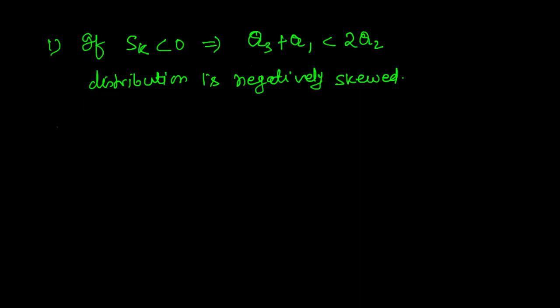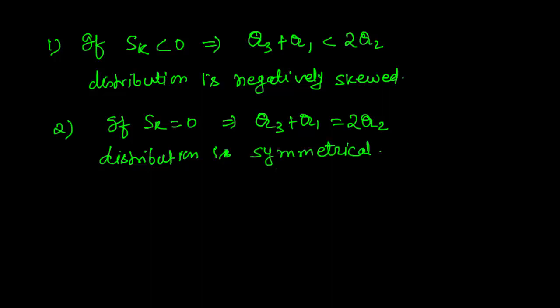Now the second case: when your skewness value is 0, then q3 plus q1 equals 2 times q2, and your distribution is symmetrical. That is, your median value is equidistant from first and third quartile.